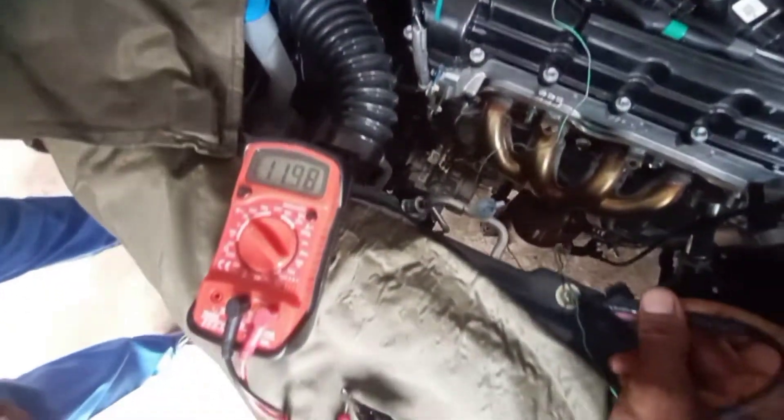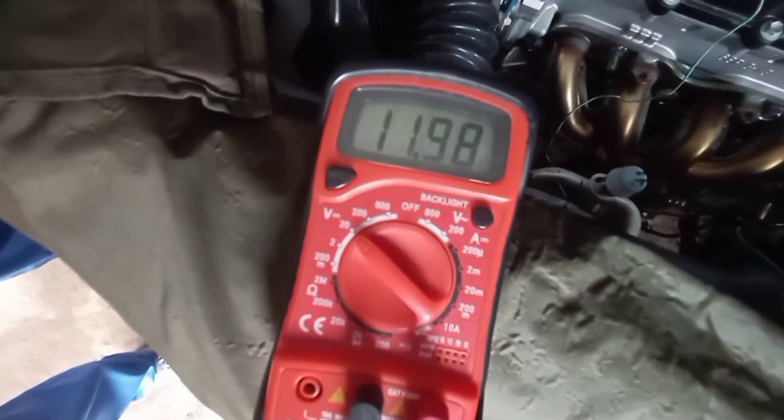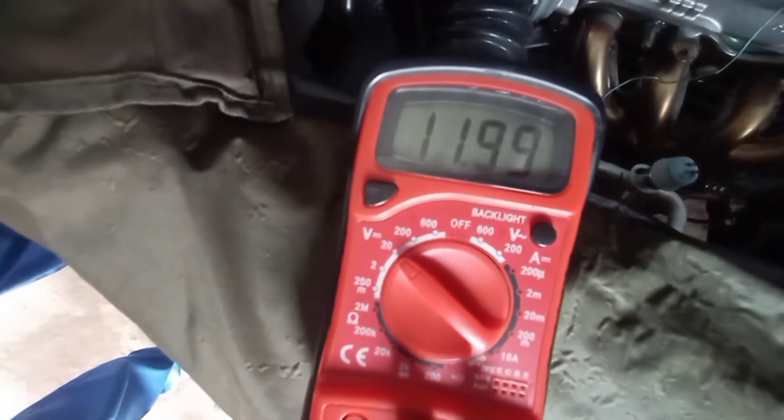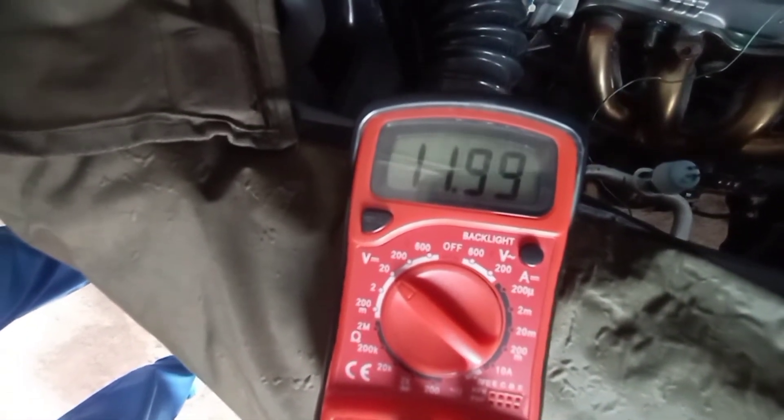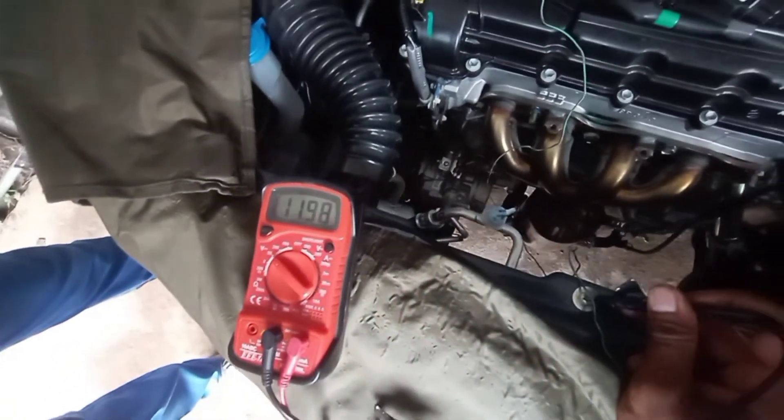A2 circuit and ground battery voltage is 11.99 when the ignition is on. It's good.